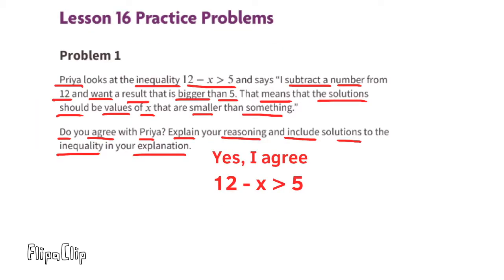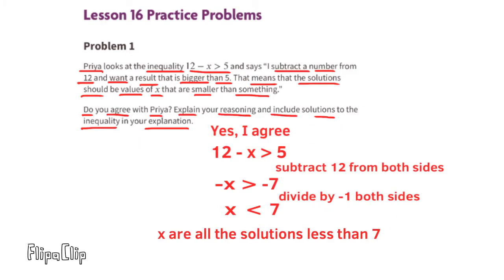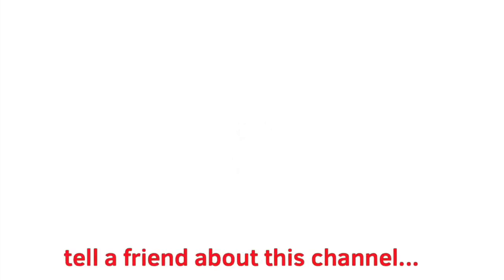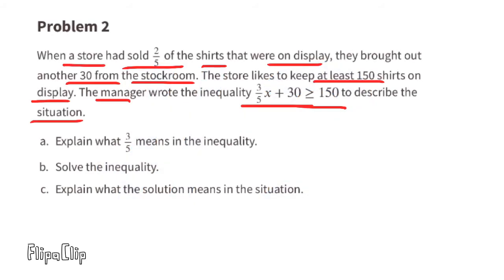Let me show you. 12 minus x is greater than 5. Subtract 12 from both sides — that gives you negative x is greater than negative 7. We'll have to multiply or divide both sides by negative 1. When we do that, we change the inequality sign, so now it reads positive x is less than positive 7. x represents all the solutions less than seven.